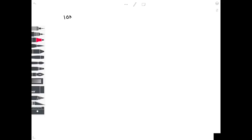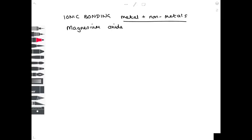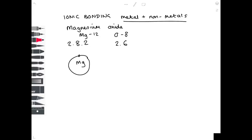Ionic bonding involves a metal and a non-metal — use the periodic table to check. For magnesium oxide: magnesium has atomic number 12 and oxygen has atomic number 8. Their electronic configurations are 2,8,2 and 2,6 respectively. We only need to draw outer electrons in the dot-and-cross diagram, using crosses and dots to distinguish the two atoms.